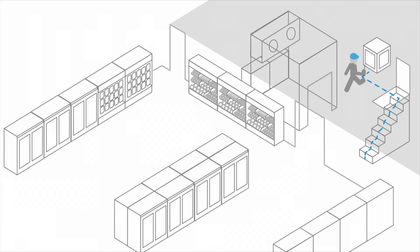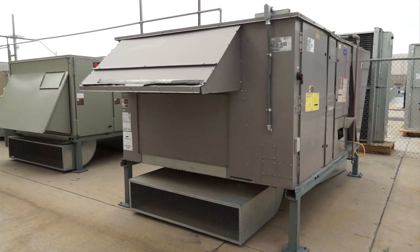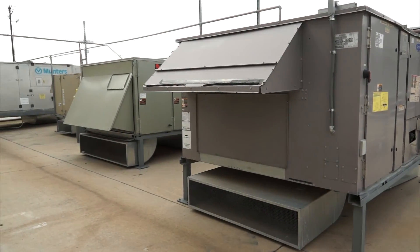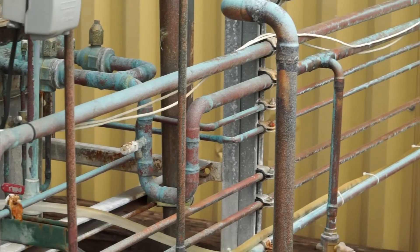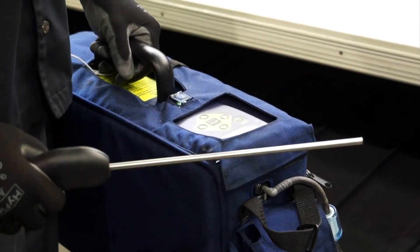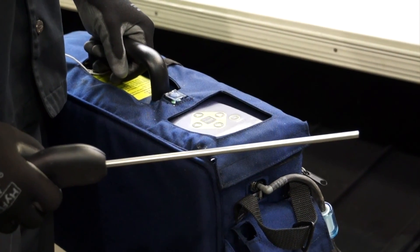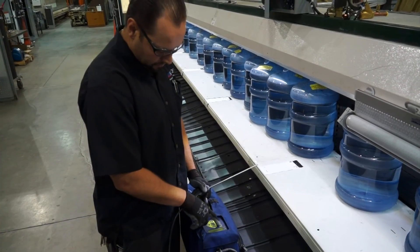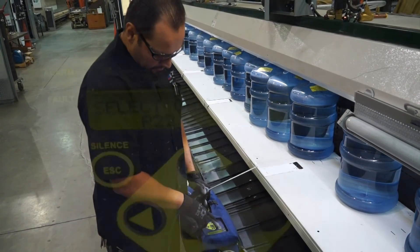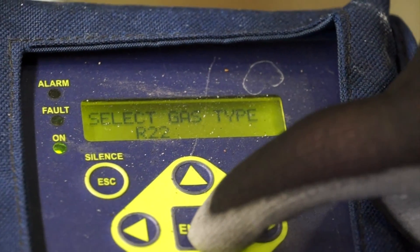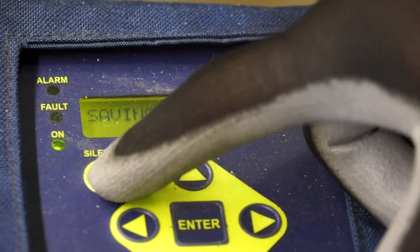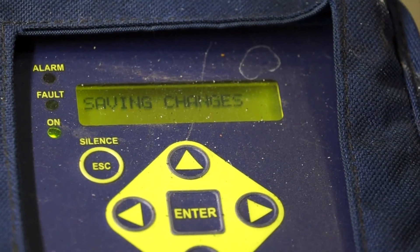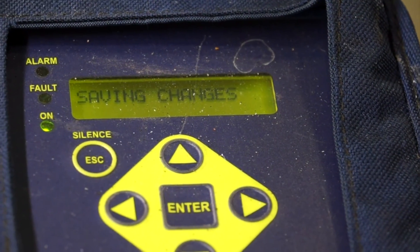Proceed to the roof equipment area. Locate equipment to be checked and look for oil traces and stains. Turn on the leak detector in an area without any possible refrigerant leaks and calibrate following manufacturer's instructions. It is recommended to start the inspection with the tool set to medium; the tool can be adjusted once a leak is found.